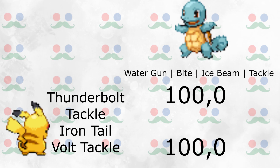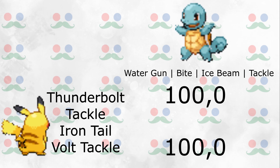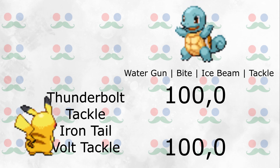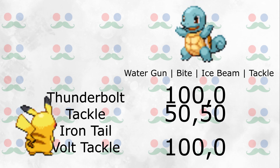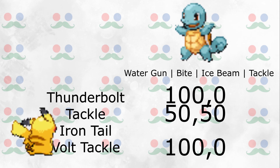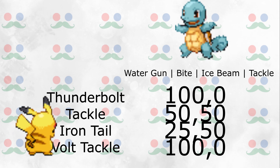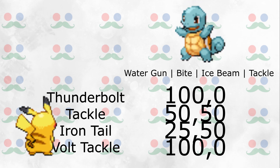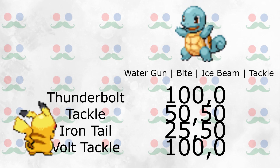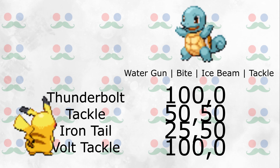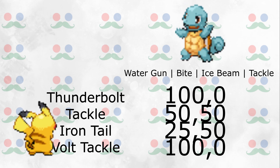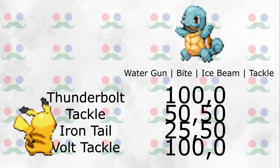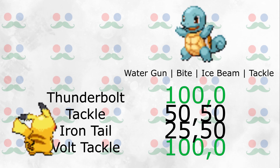When Pikachu uses Tackle, Squirtle takes 50% damage from a neutral hit and retaliates with any move — also neutral — taking 50% of Pikachu's health. When Pikachu uses Iron Tail, it only does 25%, because Iron Tail is resisted by Squirtle. With these in the payoff matrix, we can find our equilibrium. Pikachu has a dominant strategy: use Thunderbolt or Volt Tackle regardless of what Squirtle chooses. Squirtle has no dominant strategy — it's indifferent to any of its attacks. If Pikachu uses an electric move, Squirtle won't get to act anyway; if it doesn't, Squirtle deals 50% to Pikachu with any move. The equilibrium: Pikachu defeats Squirtle with Thunderbolt or Volt Tackle.